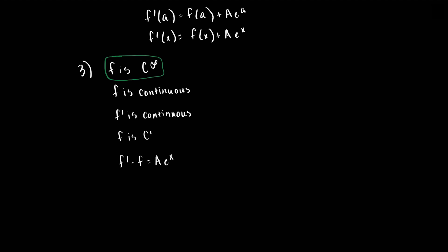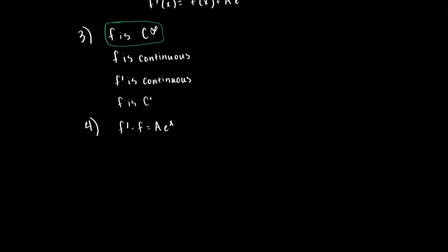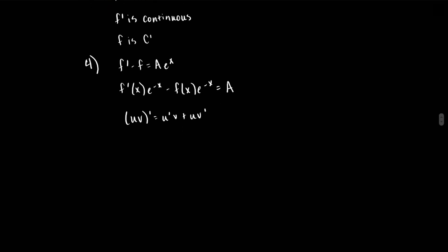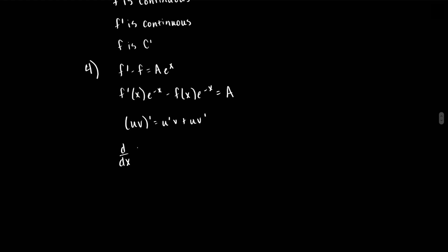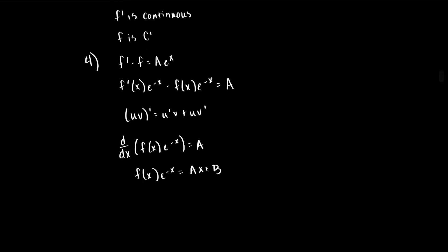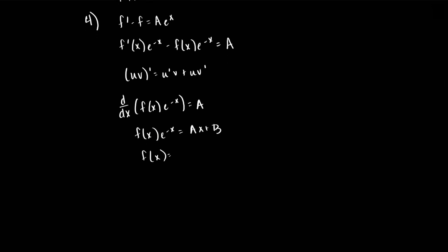So let's solve this differential equation to identify f — this is our fourth step. If we multiply the differential equation by e to the negative x on both sides, we have f prime of x times e to the negative x minus f of x times e to the negative x is equal to a. We recognize the product rule identity, so d over dx of f of x times e to the negative x is equal to a. Integrating, f of x times e to the negative x is equal to a times x plus b, where b is a constant of integration. In other words, f of x is equal to (a x plus b) times e to the x.